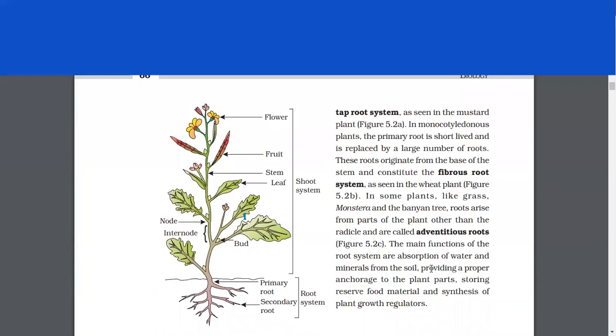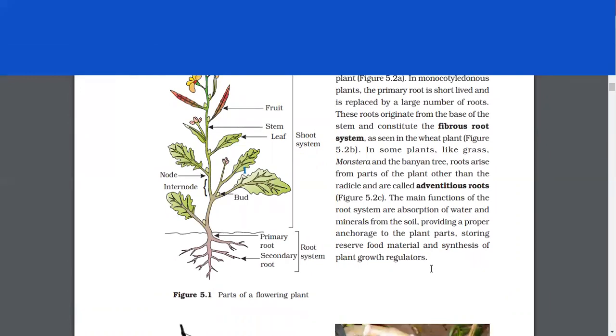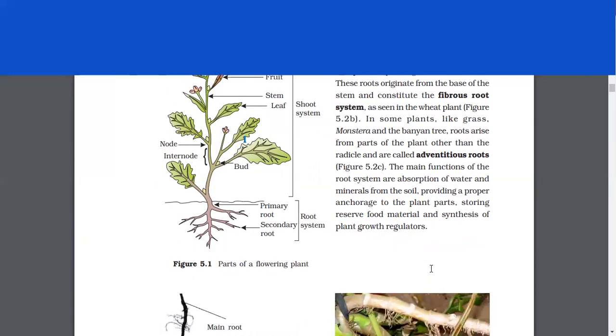In monocotyledonous plants, the primary root is short-lived and is replaced by a large number of roots. These roots originate from the base of the stem and constitute the fibrous root system as seen in the wheat plant. In some plants like grass, monstera and the banyan tree, roots arise from parts of the plant other than the radicle and are called adventitious roots.